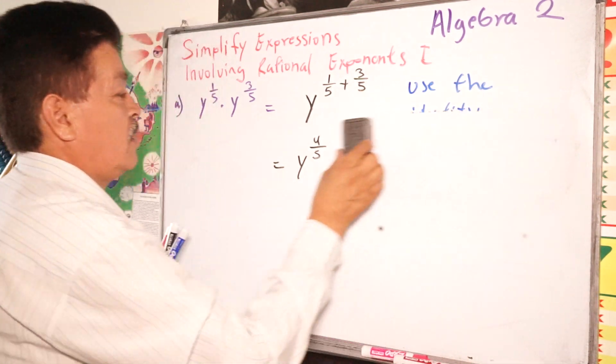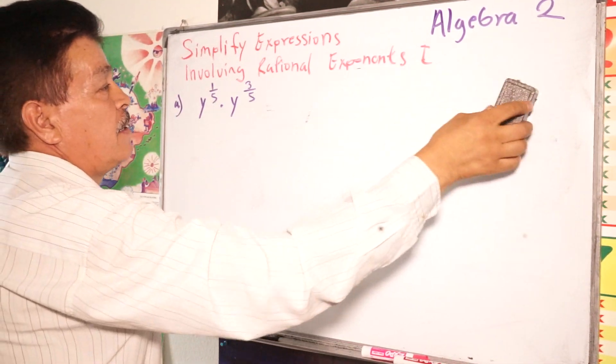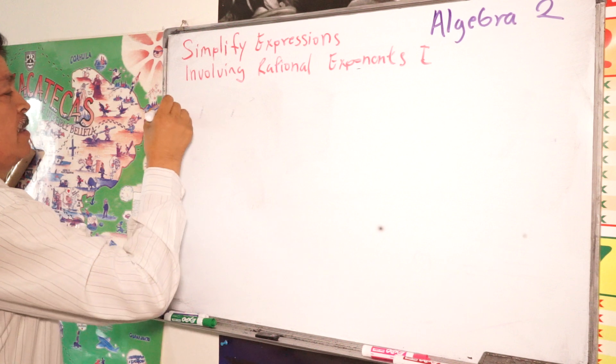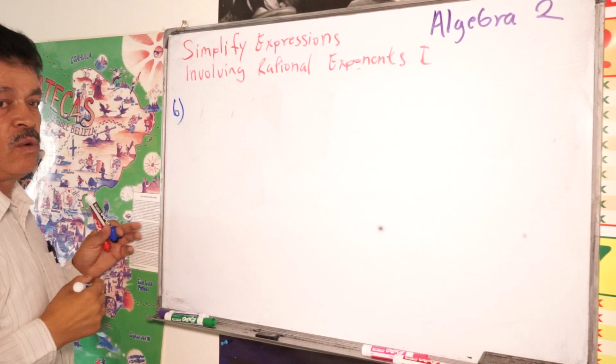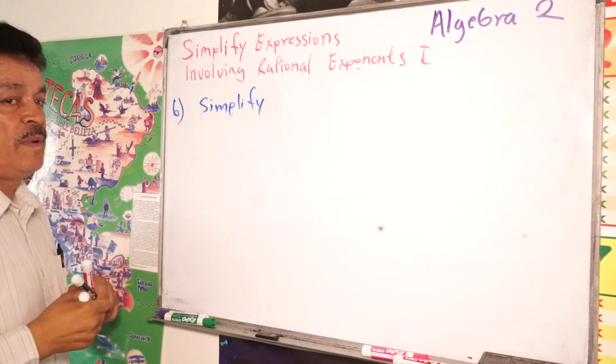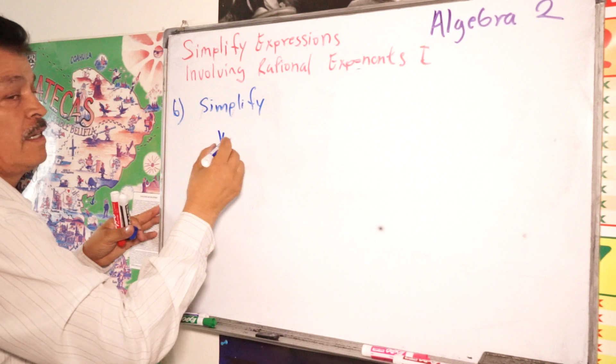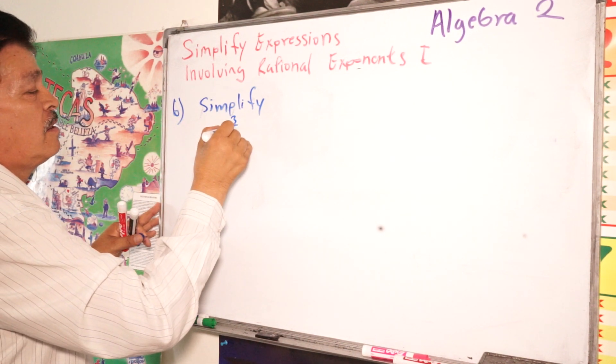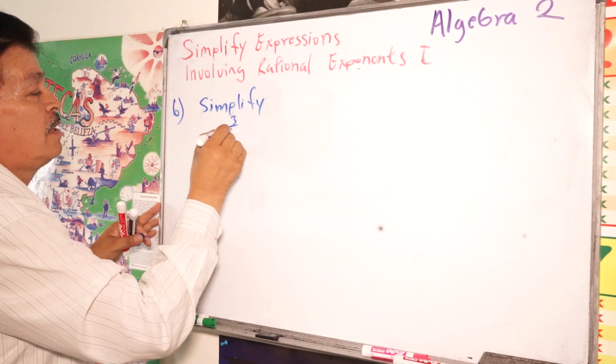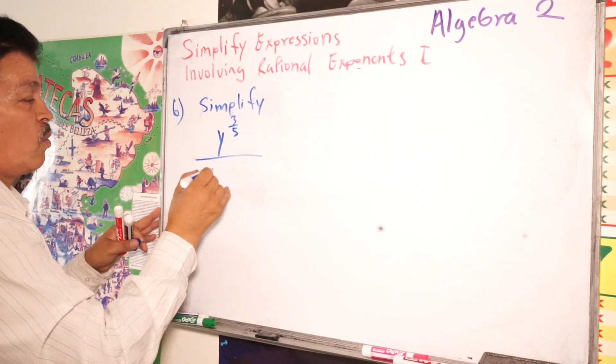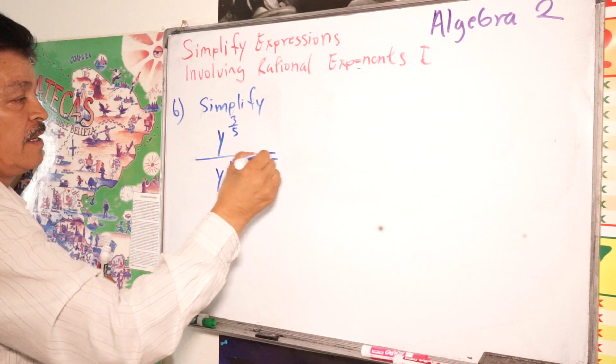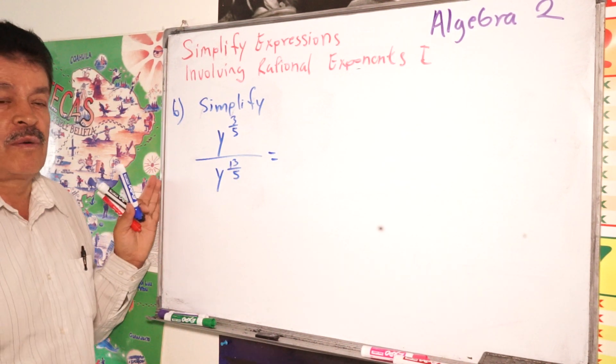Let's, let's try to solve another problem. So B. Second one. So simplify. Simplify Y to the third, 3 fifth, 3 fifth, 3 fifth, divided by Y by Y by 13 to the fifth power, right? So we have this. So how's solve our problem?